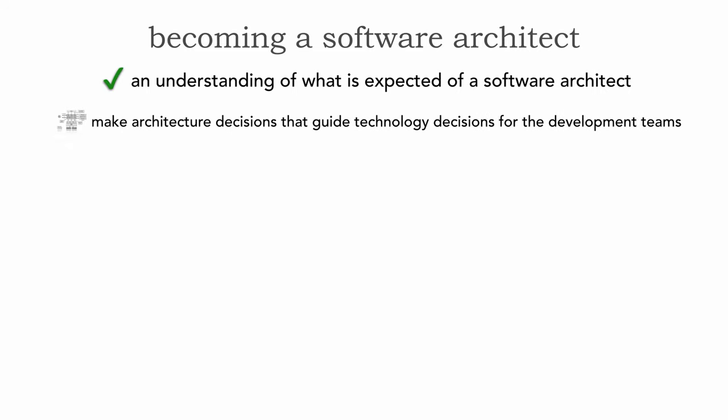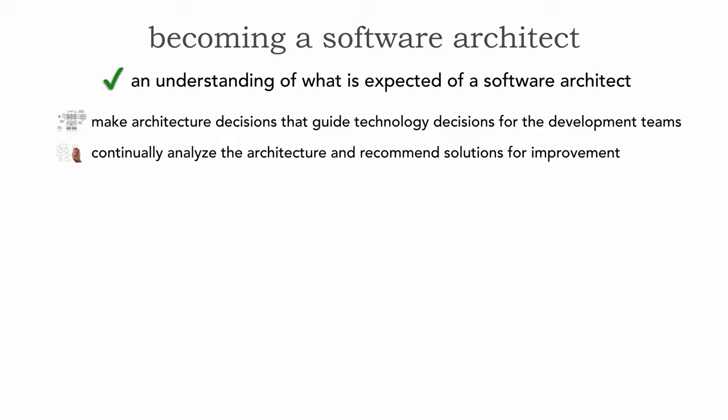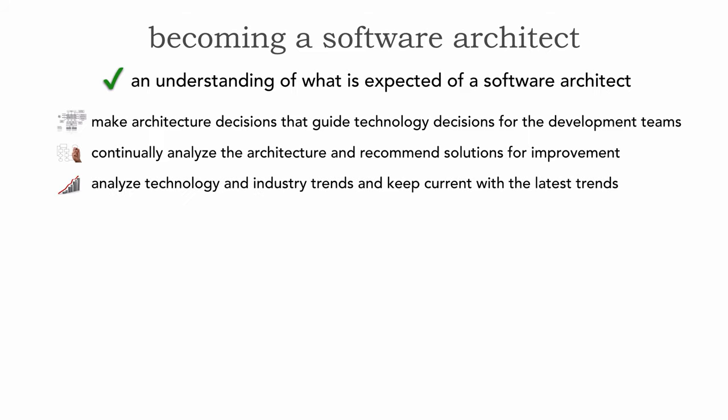The first expectation is to make architecture decisions that guide technology decisions for the development teams — whether for your team, division, or entire company. It's also about continually analyzing the architecture to recommend solutions for improvement, which is about analyzing architecture vitality. Third, it's about analyzing not only the architecture but also technology and industry trends and keeping current. The fourth expectation is to ensure compliance with the architecture, because if you make architecture decisions for availability, scalability, or performance and don't ensure compliance, those decisions won't be implemented and the architecture won't work.